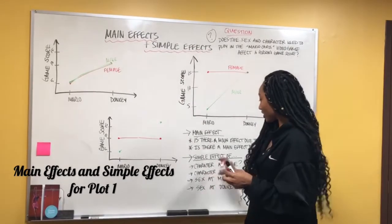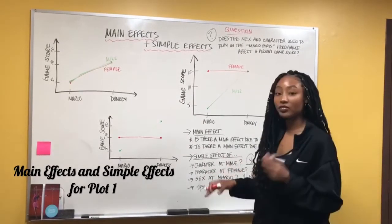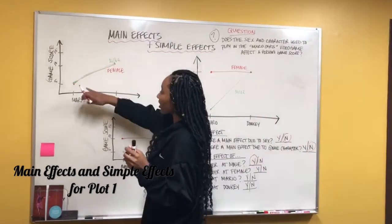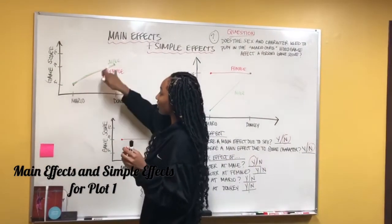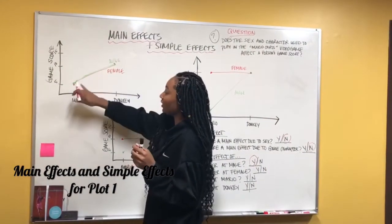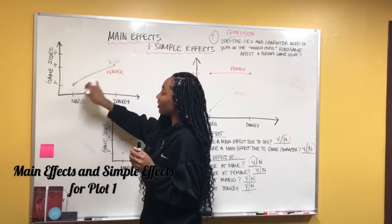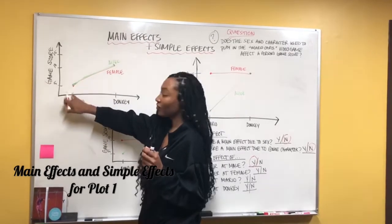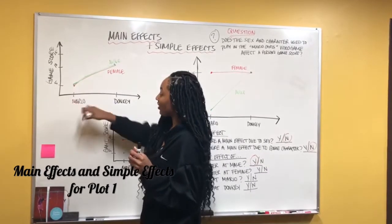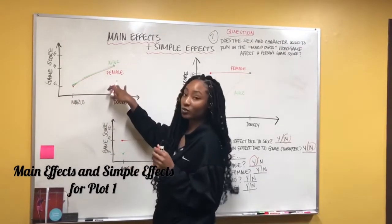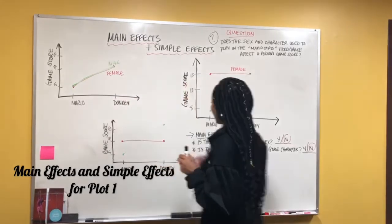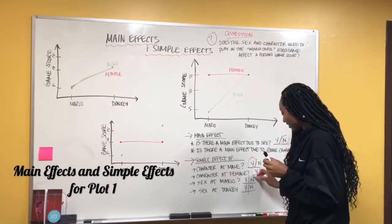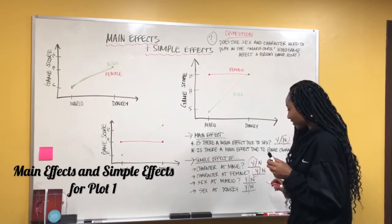Now we'll do female. Is there a simple effect of character at female? Excluding the males from this graph, we'll just look at the female line. Females — same thing — when they use Mario during the game they scored a 5, but when they use Donkey they scored a 15. So there is a simple effect at female.